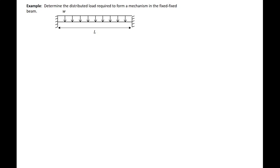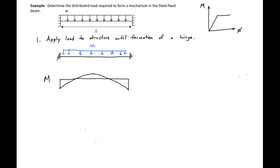In this design example, we're going to determine the distributed load required to form a mechanism in the fixed-fixed beam shown. In this problem we're going to assume that we have an elastic-plastic material, so we'll get a moment up until MP, and then the section will hold MP until failure or formation of the mechanism.